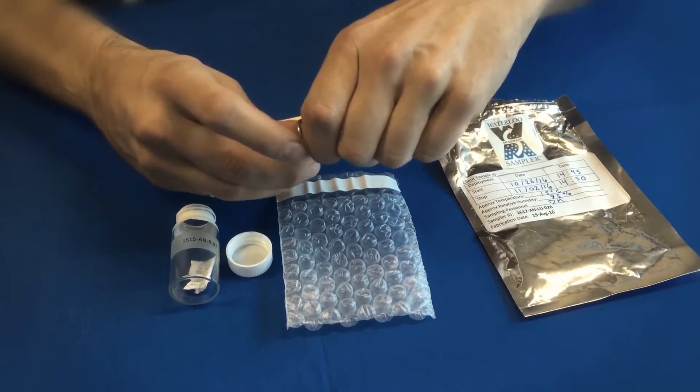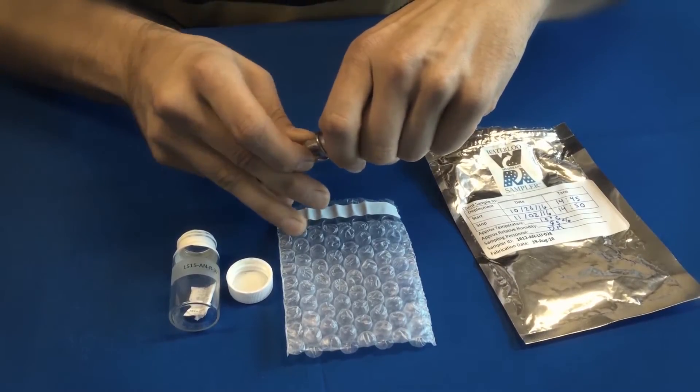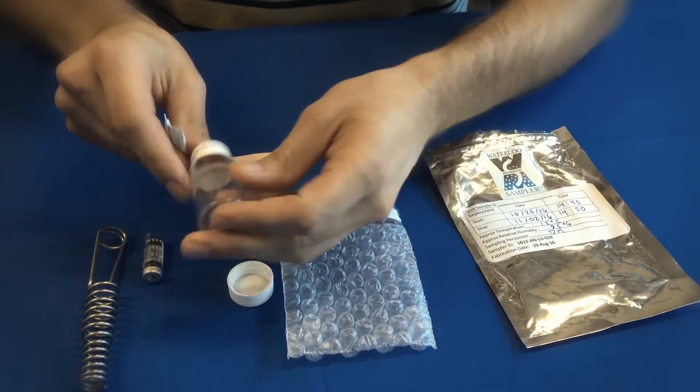At the end of the sampling period, remove the sampler from the wire hanger. Remove the mini pack from the glass vial and place the mini pack in the aluminum pouch.